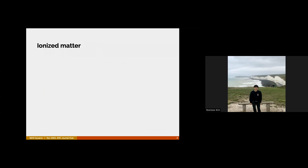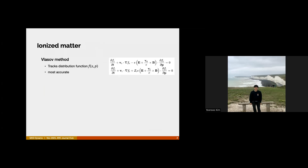There are mainly three different theoretical approaches that people use to study ionized matter. The first is called the Boltzmann method, which tracks the distribution function f that we've seen in statistical mechanics classes. This is the most accurate method but really hard — if you look at the equations, you're solving for the evolution of those distribution functions for both electrons and ions.